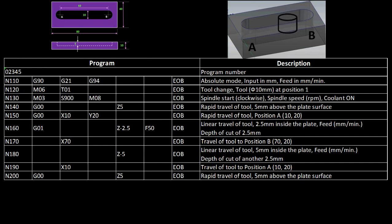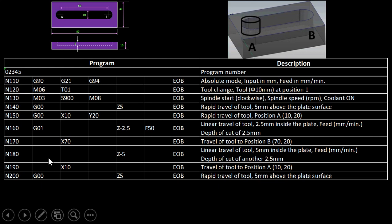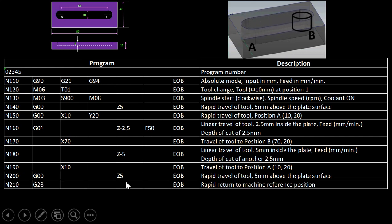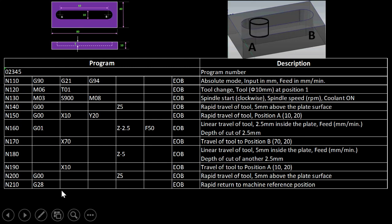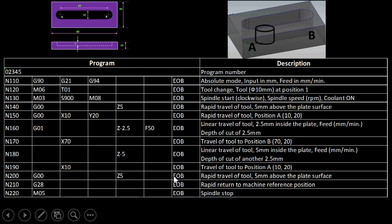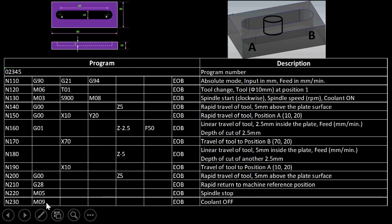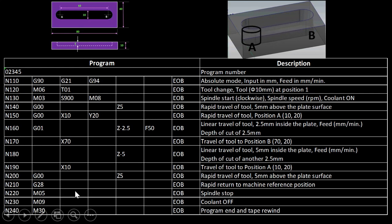After returning to A, G00 Z5 performs a rapid travel to bring the tool back 5 mm above the work surface. G28 commands a rapid return to the machine reference position. M05 stops the spindle, M09 turns the coolant off, and M30 ends the program and rewinds the tape.